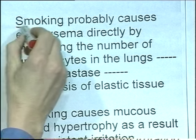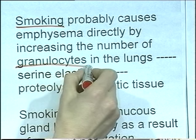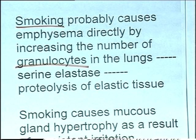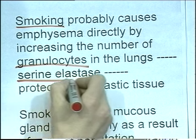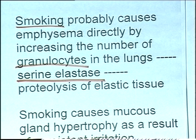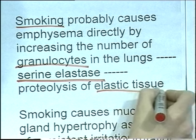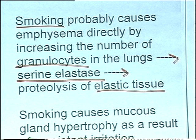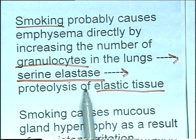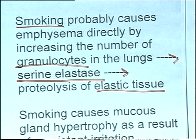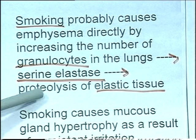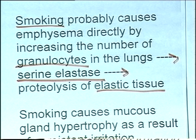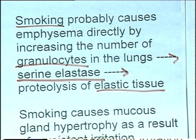So smoking, first of all, increases the number of granulocytes. The granulocytes secrete serine elastase, which is a proteolytic enzyme that breaks down elastic tissue. Because the lungs are elastic structures, there is elastic tissue in the walls of the alveoli, and that is actually broken down. So alveolar destruction is a direct effect of smoke, mediated through the granulocytes and serine elastase.